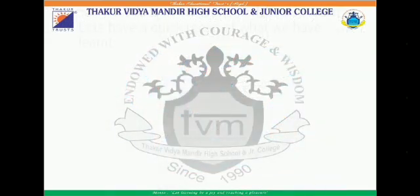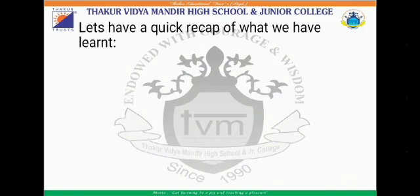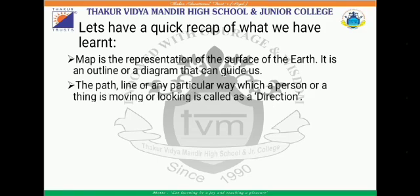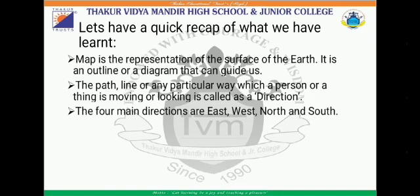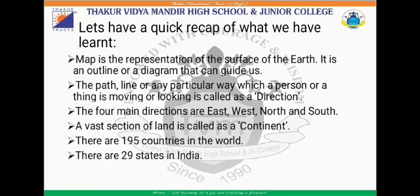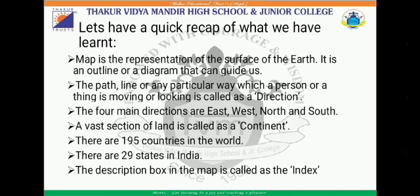Now my dear students, let's have a quick recap of what we have learnt. A map is the representation of the surface of the earth — it is an outline or a diagram that can guide us. The path, line, or any particular way in which a person or thing is moving or looking is called a direction. The four main directions are East, West, North, and South. A vast section of land is called a continent. There are 195 countries in the world and 29 states in India. The description box in the map is called the index.